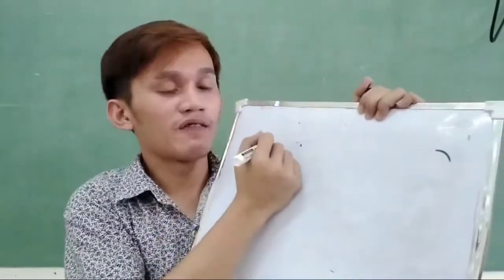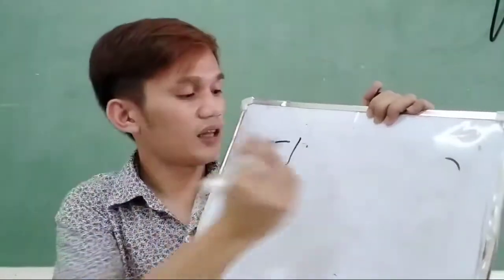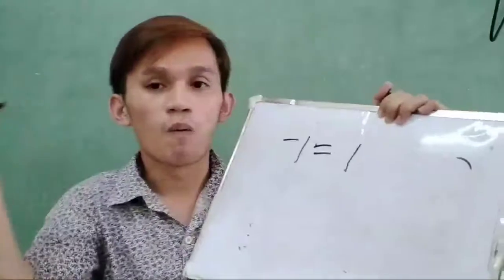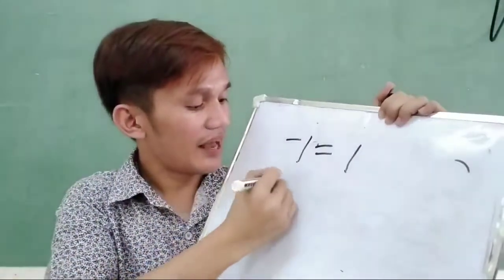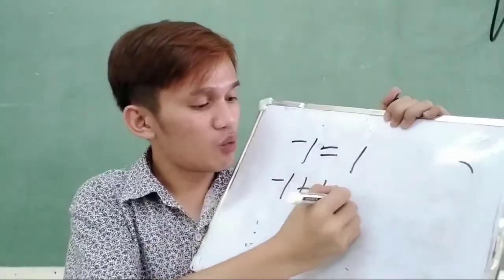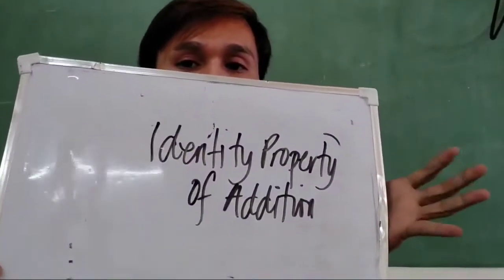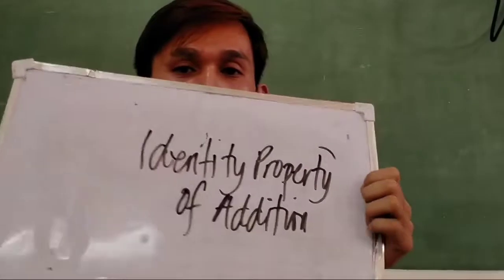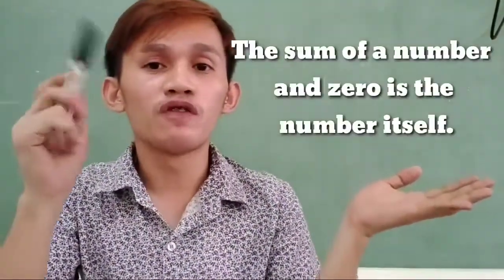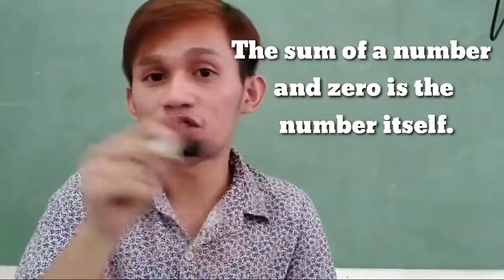Another example: suppose that we have negative 1. So what is the additive inverse of negative 1? It is 1. And negative 1 plus 1 is equal to 0. We will proceed now to the next property, which is the identity property of addition. So in this property, it states that the sum of a number and 0 is the number itself.